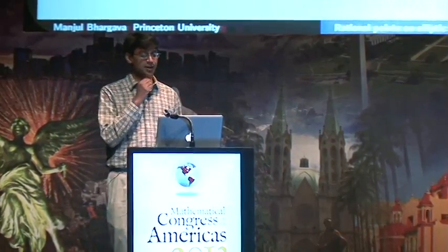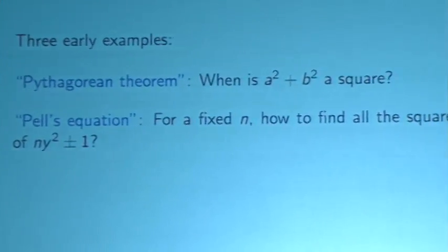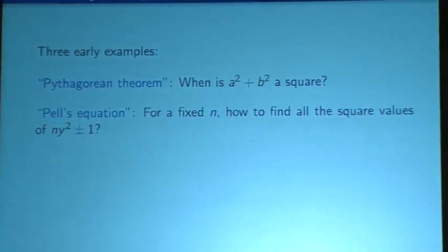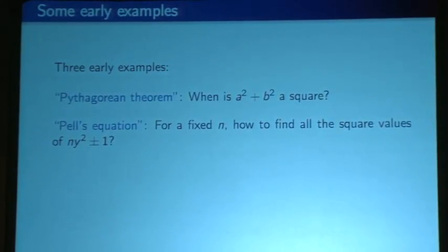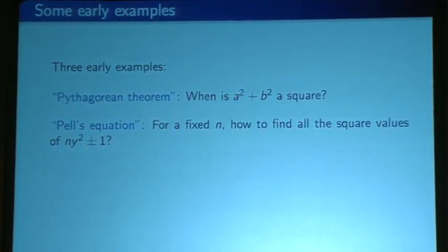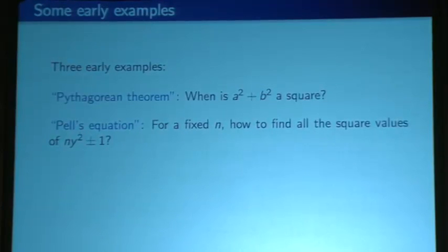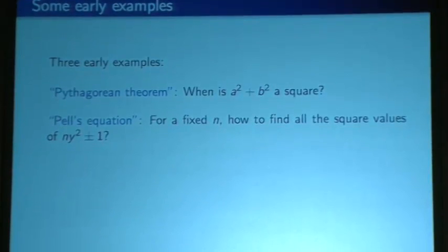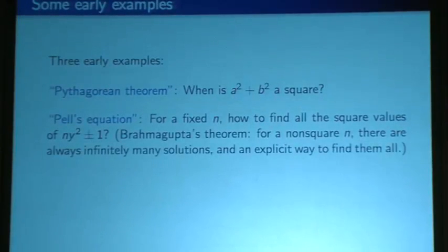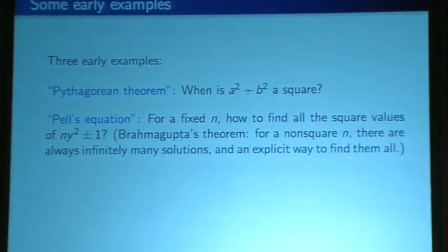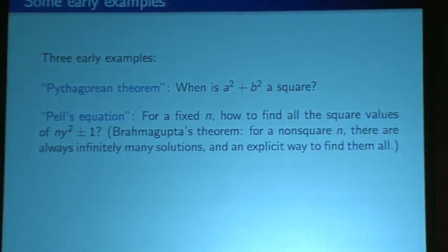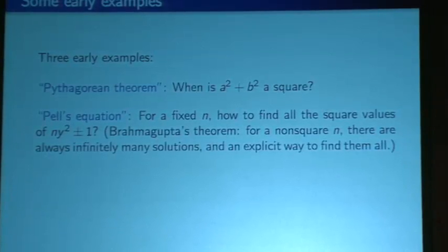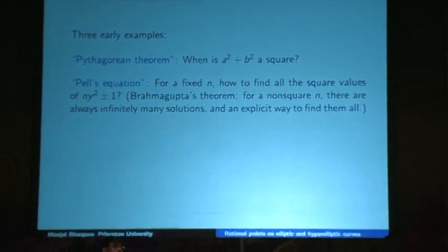Another very famous example of a square equation is Pell's equation. For fixed n, the question is: how can one find all square values of ny² ± 1? If n is fixed and you want to understand for what values of y is n·y² + 1, or n·y² − 1, going to be a square — this was also studied by many cultures. It's a theorem from the 6th century that if you take a non-square value of n, then ny² + 1 and ny² − 1 always have many solutions, and there's an explicit way to find them all.